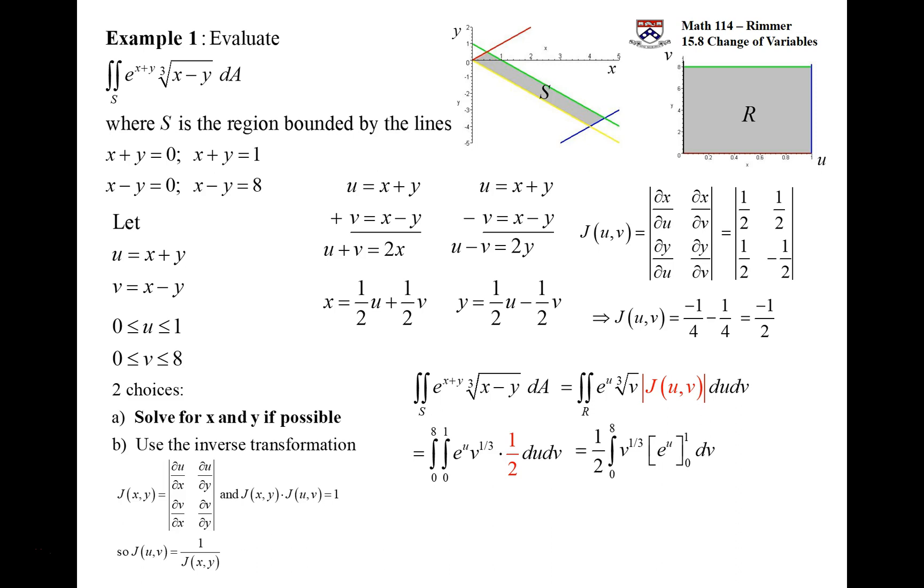So e^u's anti-derivative is e^u. And pull the half out. Put the 1 in and put the 0 in. So e^1 minus e^0. And that'll give you just e minus 1. Pull that out with the half.